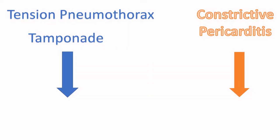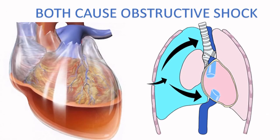What I want you to do is take tension pneumothorax and tamponade as one unit, as these usually present as an emergency condition in an acute setting, and take constrictive pericarditis as another unit because it usually presents as a chronic condition — I use 'C for chronic' to make things easier. Both tamponade and tension pneumothorax are grouped together because both cause obstructive shock.